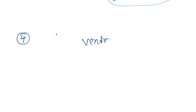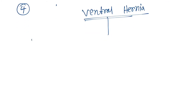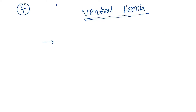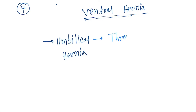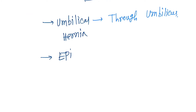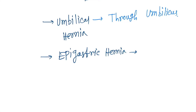Next we'll discuss the ventral hernias. Under ventral hernias, the first one is the umbilical hernia, where the organ or tissue comes through the umbilicus. Next is the epigastric hernia, where the organ or tissue comes through a weakened area in the walls of the abdomen.